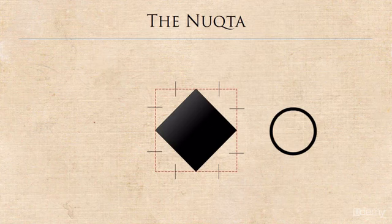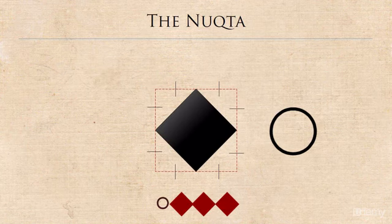So for example, if you were to see a measurement that was three Nuqtas with a circle beside it, what this really means is that the measurement is three and a half Nuqtas.